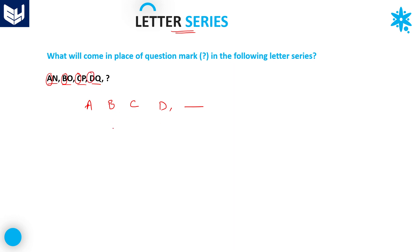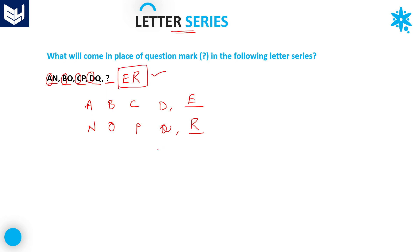The first letters are A, B, C, D — these are in consecutive order, so the next letter must be E. After that, observe the second letters: N, O, P, Q. These letters are also in consecutive order, so after Q the next letter is R. Therefore, in place of the question mark, the first letter is E and the second letter is R — the answer is ER. After AN, BO, CP, DQ, the next two-letter term is ER.